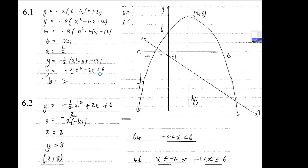Minus 1 half x squared plus 2x and then plus 6. There you go. Now we've got what b is. b is 2. We knew c was 6 and a is minus 1 half.